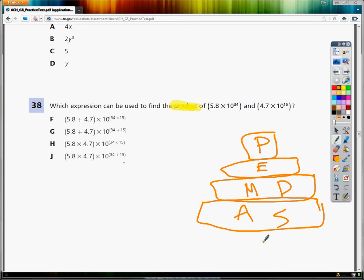when I'm working with exponents, I have to remember that whatever I do to the main numbers, I need to do one less thing on the order of operations chart to the exponents. So in this case, I'm going to multiply 5.8 times 4.7.